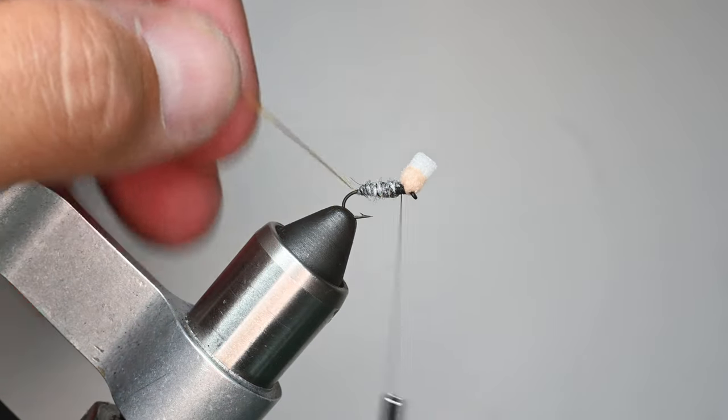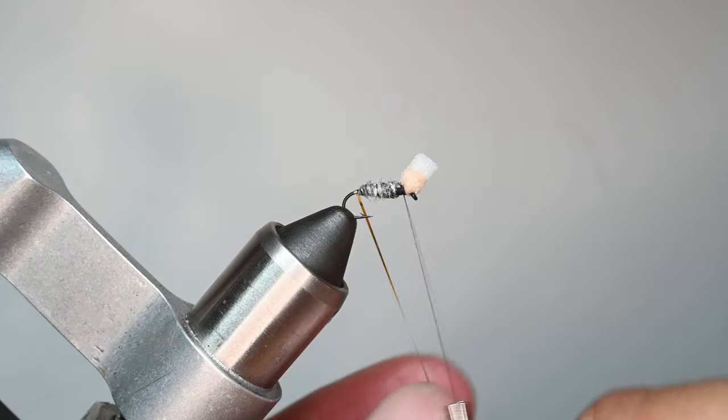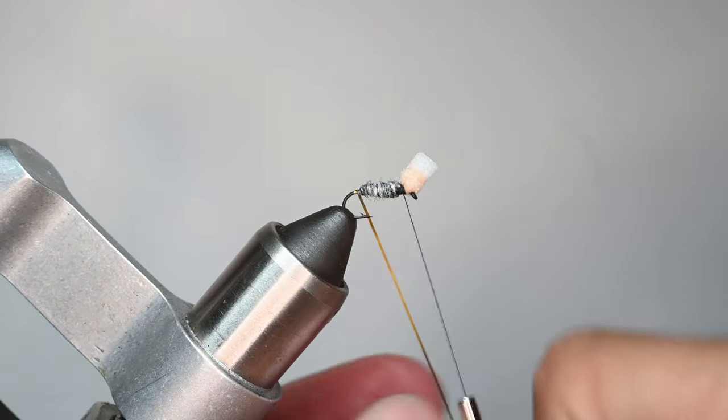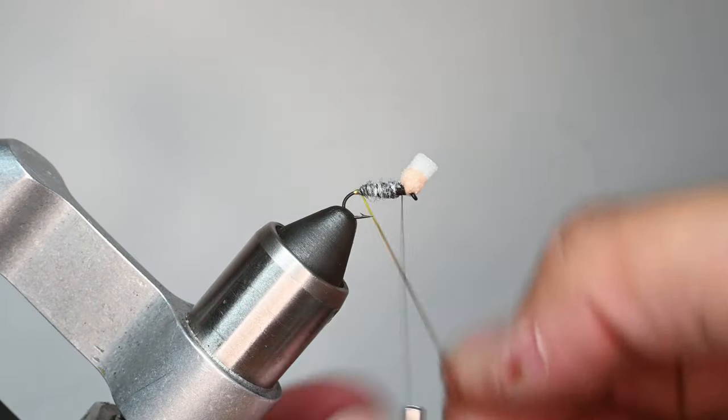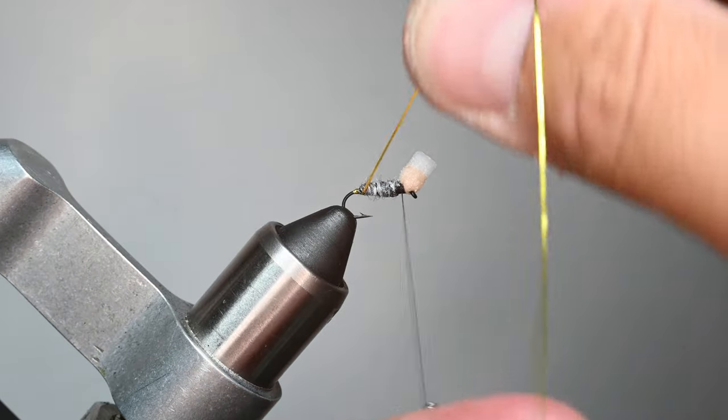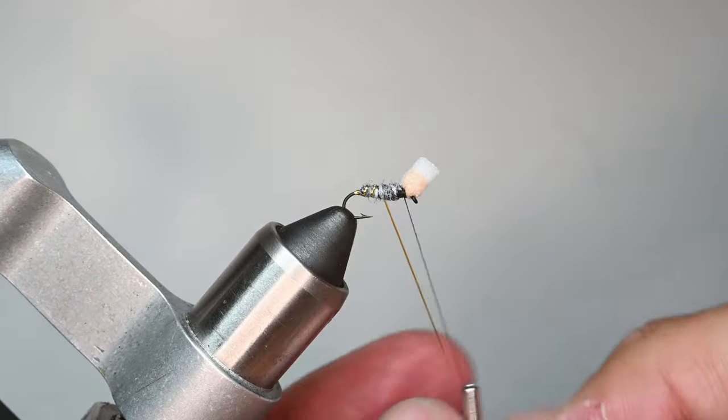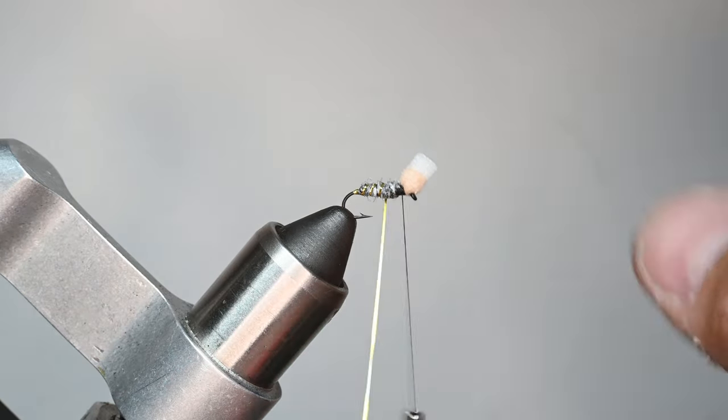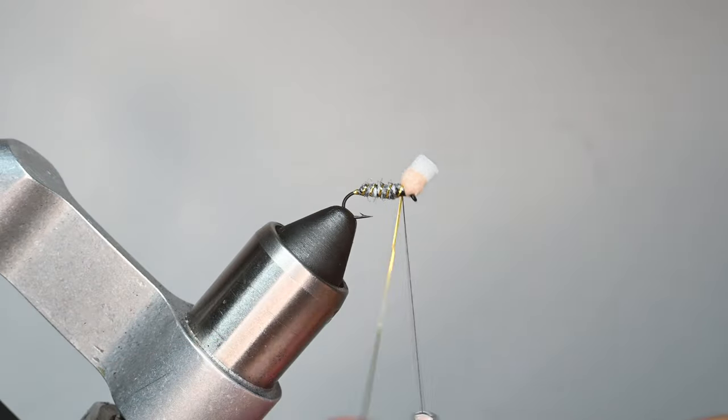Then I'll just rib this tinsel the opposite way, giving it a little hot spot at near the butt here because this is an emerger fly. So this will be down in the water and visible, so I want it to be kind of a 'hey look at me, I'm either annoying or I look tasty.'